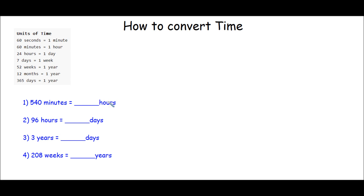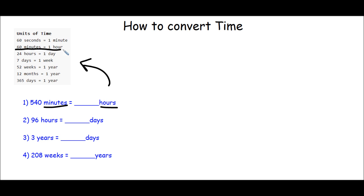We have to figure out how many hours there are in 540 minutes. We're going to go ahead and set this up as a proportion. So we're going to look for the relationship between minutes and hours in our reference chart. I see that there are 60 minutes in 1 hour, so I'm going to write that down first: 60 minutes equals 1 hour.